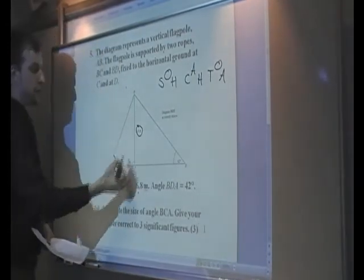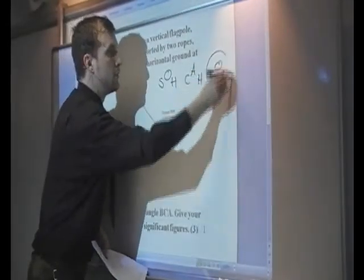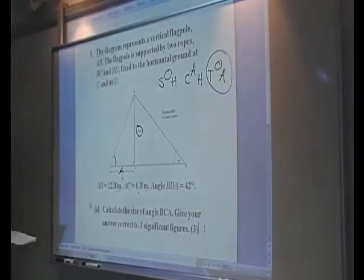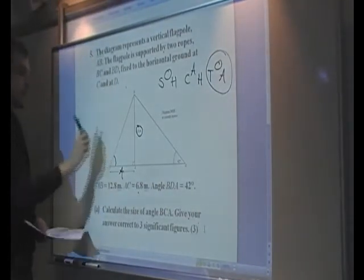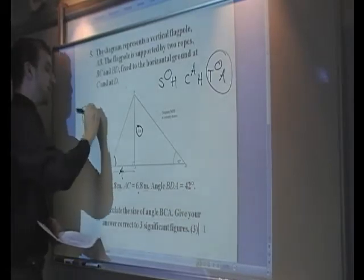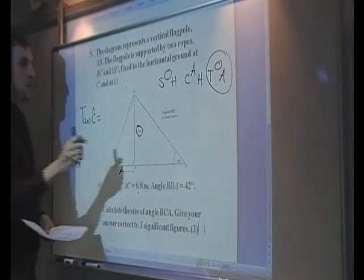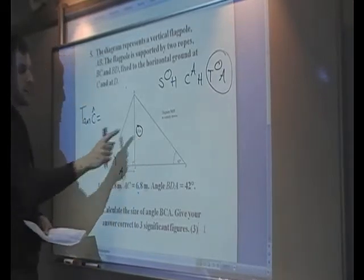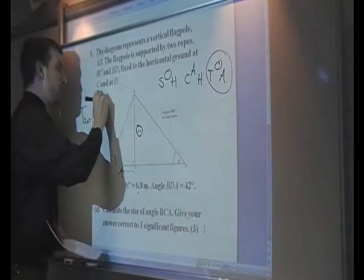Because we're dealing with opposite and adjacent, we know we're going to be using tan in this question. We know that tan of our angle will equal opposite over adjacent. And the opposite side is 12.8 metres.